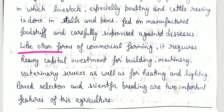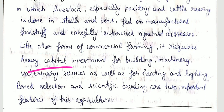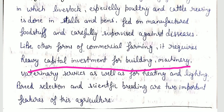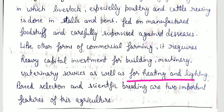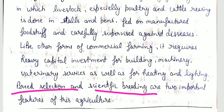Factory farming requires heavy capital investment for buildings, machinery, veterinary services, as well as for heating and lighting. Breed selection and scientific breeding are two important features of this agriculture.